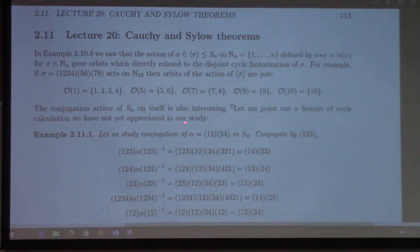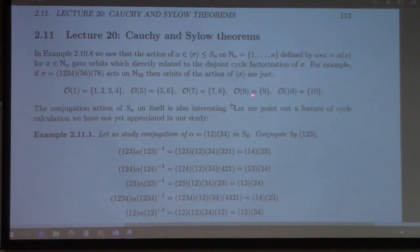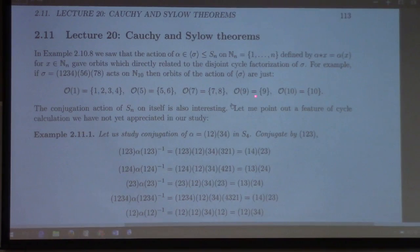The action we're talking about here is just this one: permutation acting on X is just equal to alpha of X. This is one kind of group action you can think about associated to a group of permutations. There are others. So the orbit of 7 is {7,8}. And then since 9 and 10 don't appear here, they just stay put.